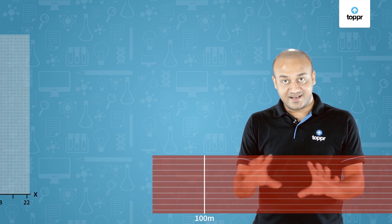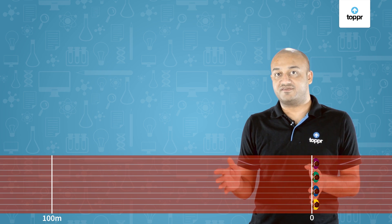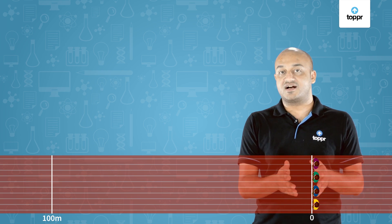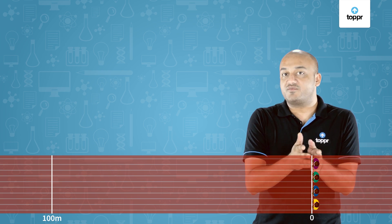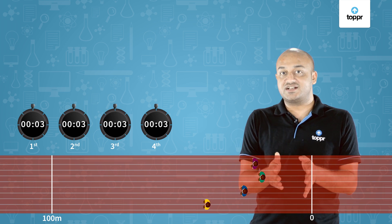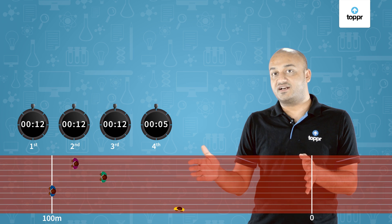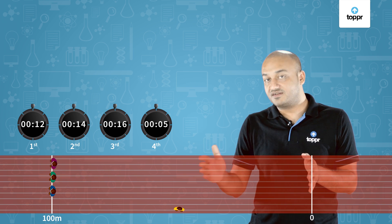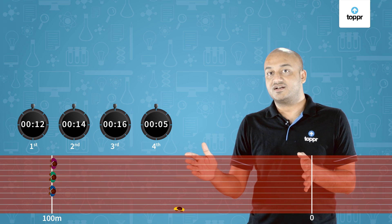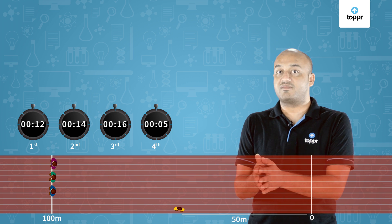Let's understand this with the help of an example. This is a hundred meter race event. You can see that all four runners are at the start line right now — that's the origin, that's from where we're going to measure the distance. They all are supposed to reach the hundred meter mark as soon as possible. Once the race starts, the first runner crosses the finish line in only 12 seconds. The second runner takes 14 seconds. The third runner takes 16 seconds. The fourth runner fell down in the middle of the path at 50 meters in a matter of 5 seconds.